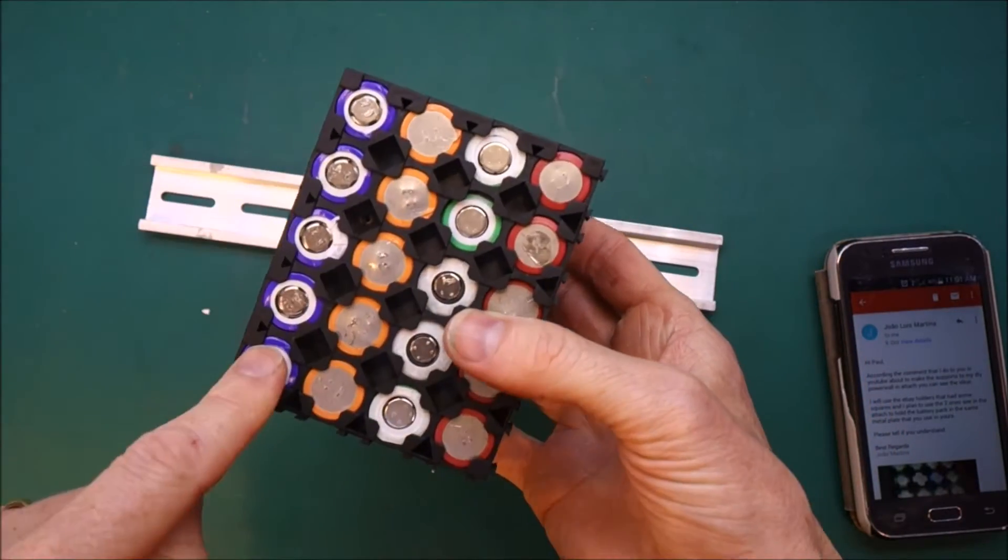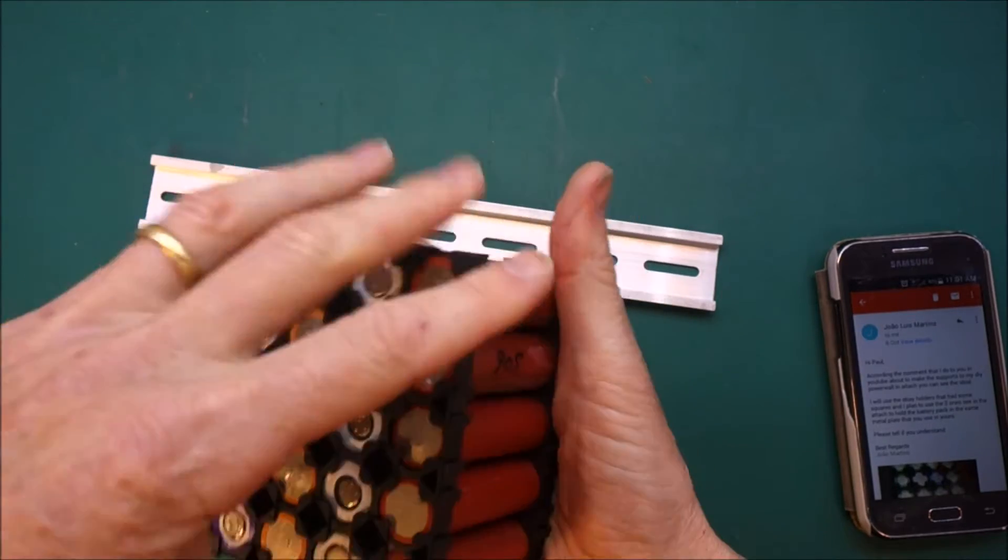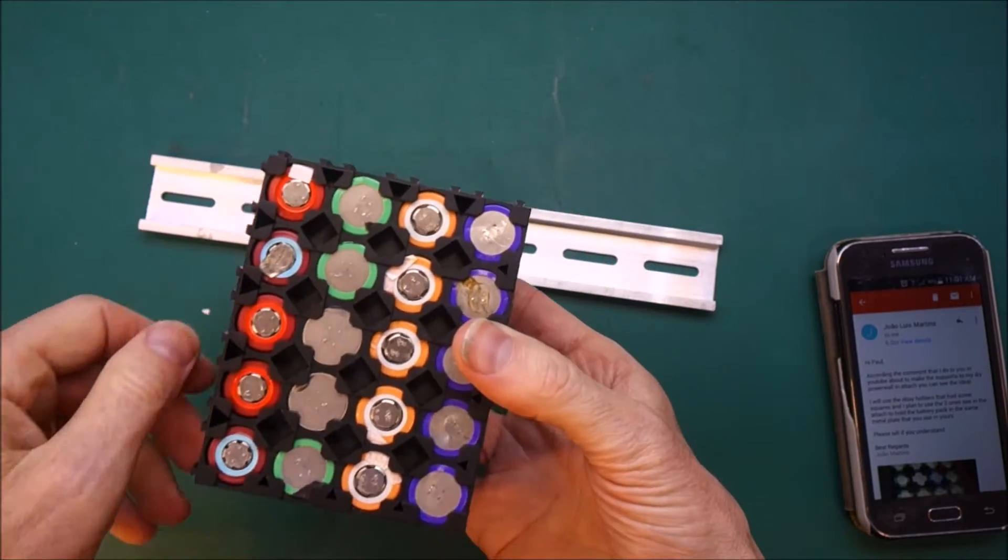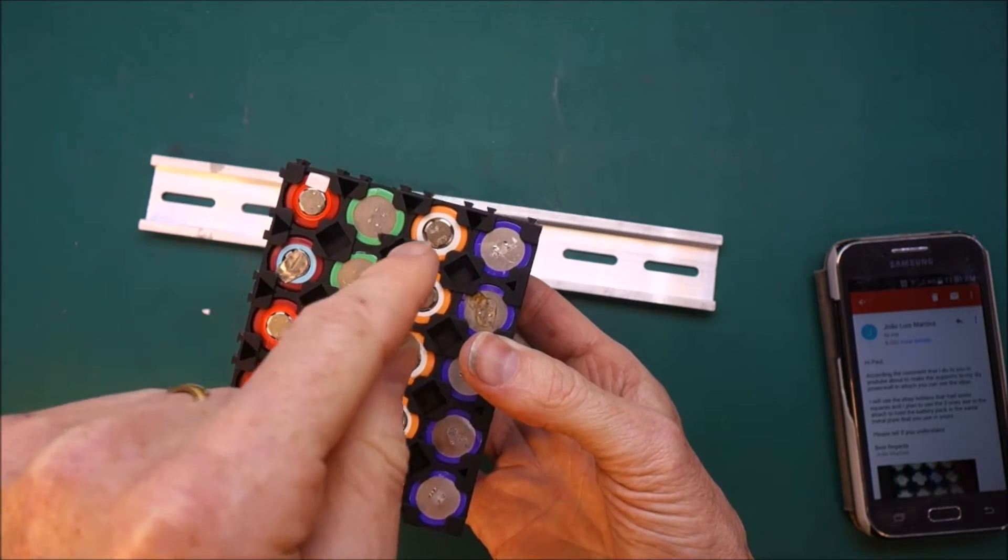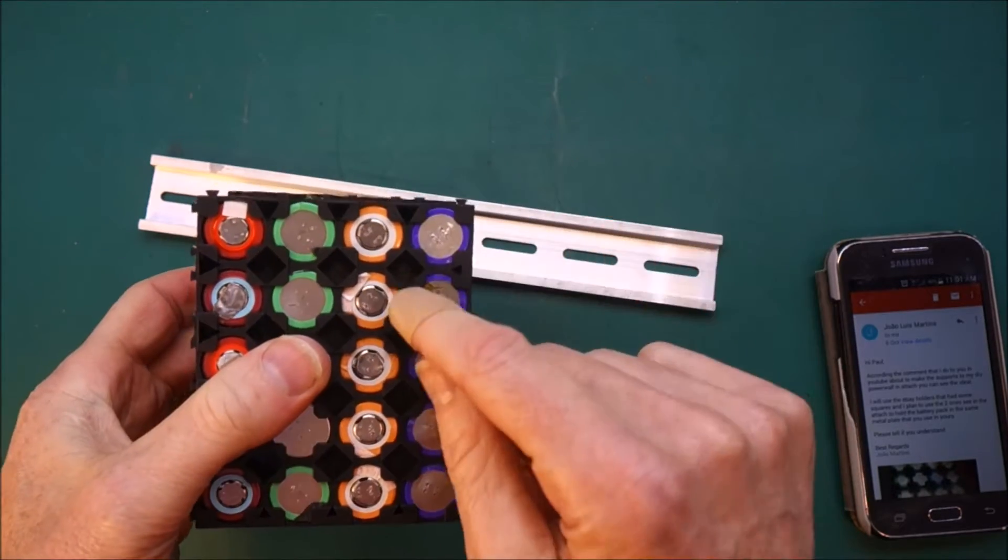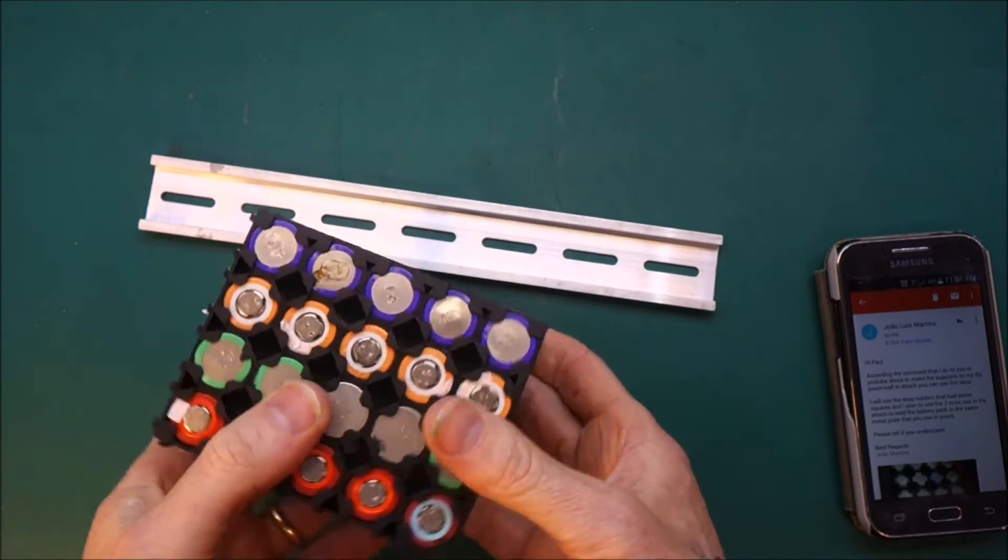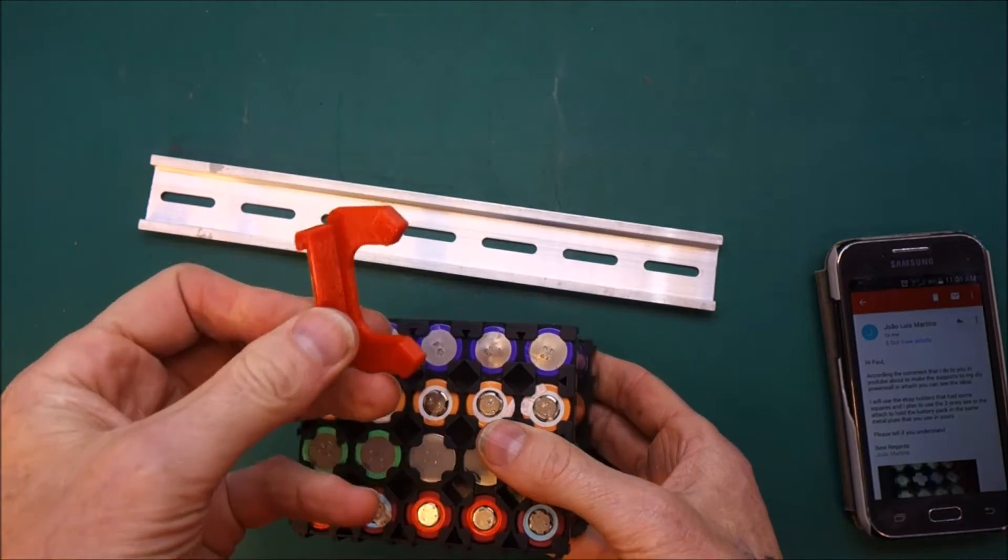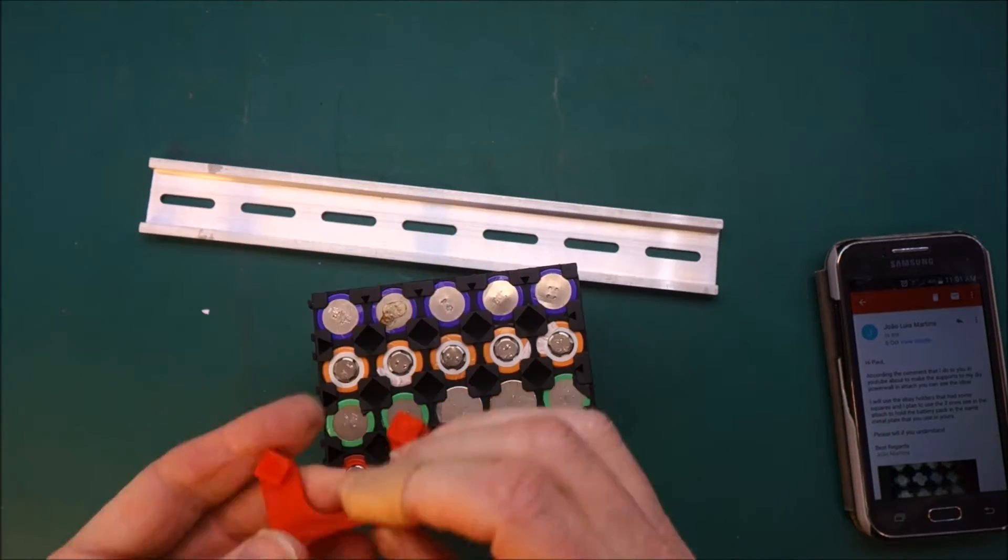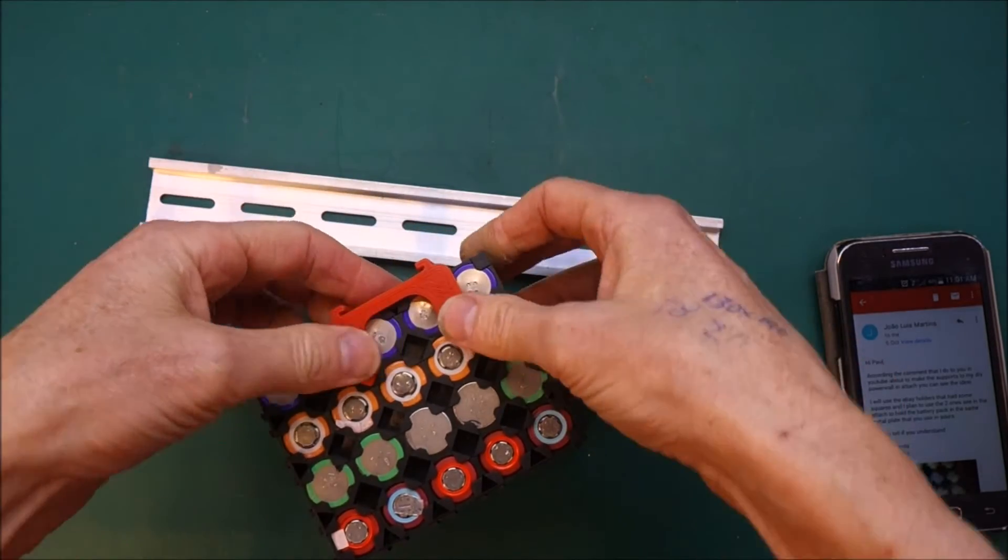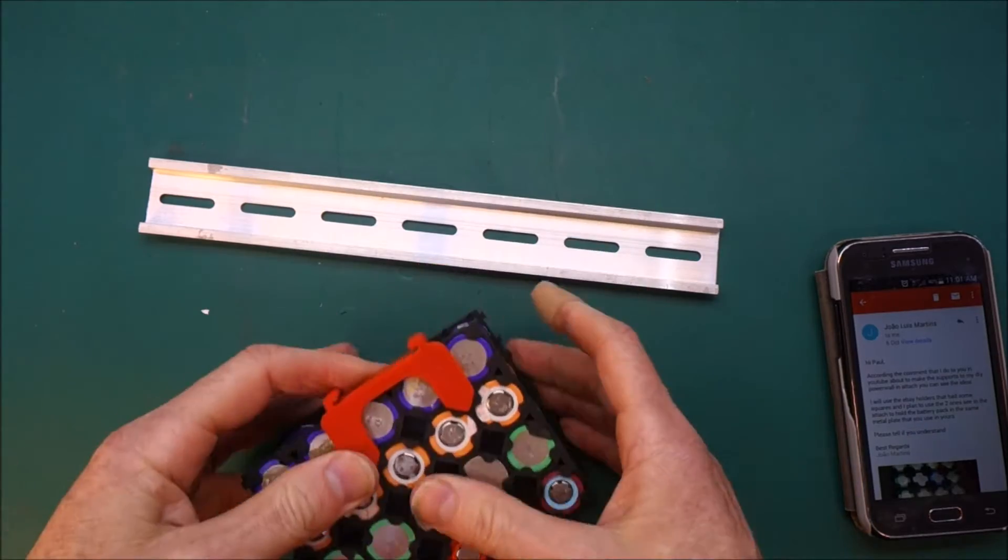So this is a 4x5 single battery clip, and it has these quite large square indentations between the cells, which is quite useful, because I have designed this little thing here, and that just clips into those holes, like that.